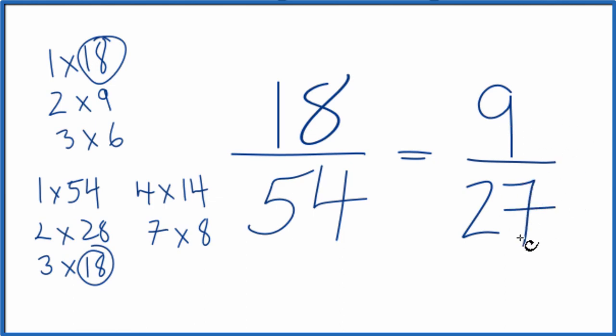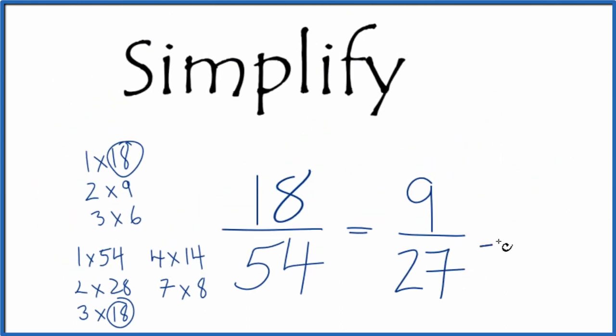Then you might know that 9 goes into 27 three times. So 9 divided by 9 is 1. 27 divided by 9, that's 3, and we get the same answer. Just this intermediary step here might make it a little bit easier if you didn't know that 3 times 18 is 54.